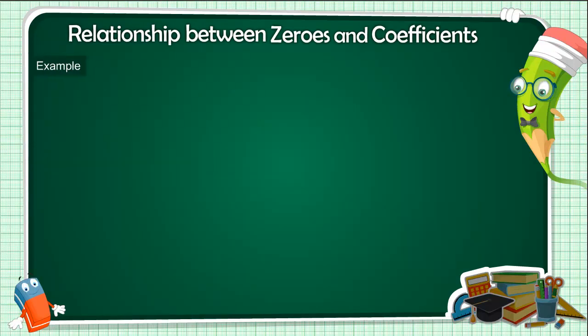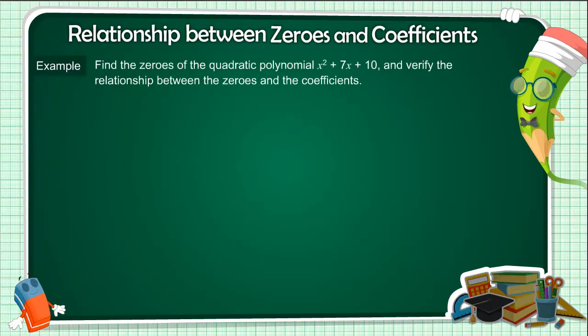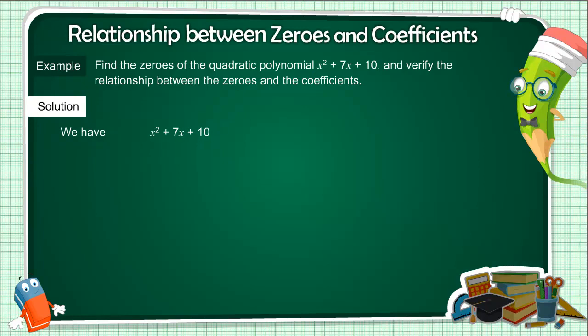Example: Find the zeros of the quadratic polynomial x² plus 7x plus 10 and verify the relationship between the zeros and the coefficients. Solution: We have x² plus 7x plus 10 equals (x plus 2)(x plus 5).